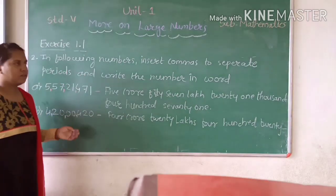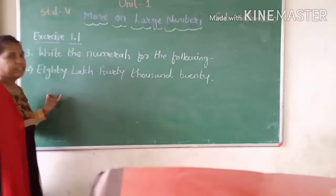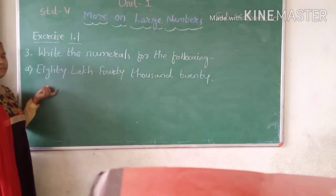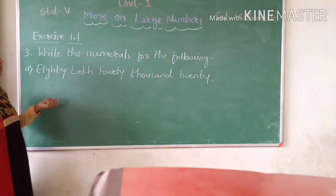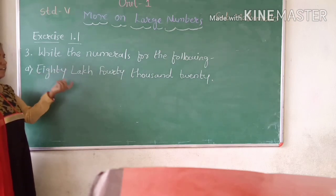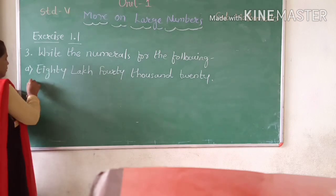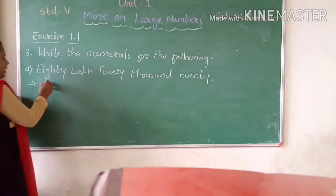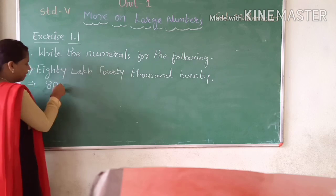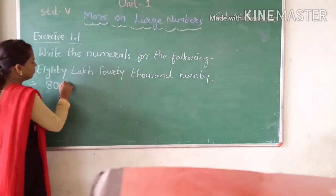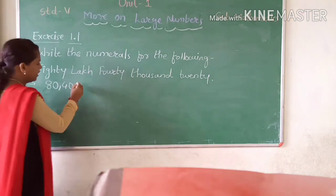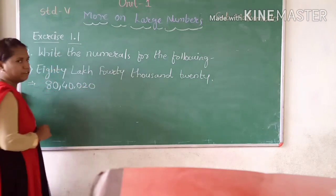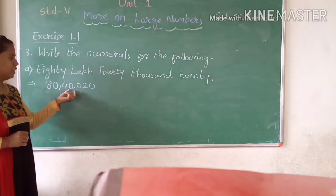I hope you understood this. Let us go for question number 3: write the numbers for the following. The question is given in words and we have to write the answer in numbers. The first question is 80 lakhs, 40 thousand, 20. 80 lakhs - write 80 after lakh, comma will come, then 40,000, comma, 20. Since the hundreds place is empty, put 0. So the answer is 80,40,020.